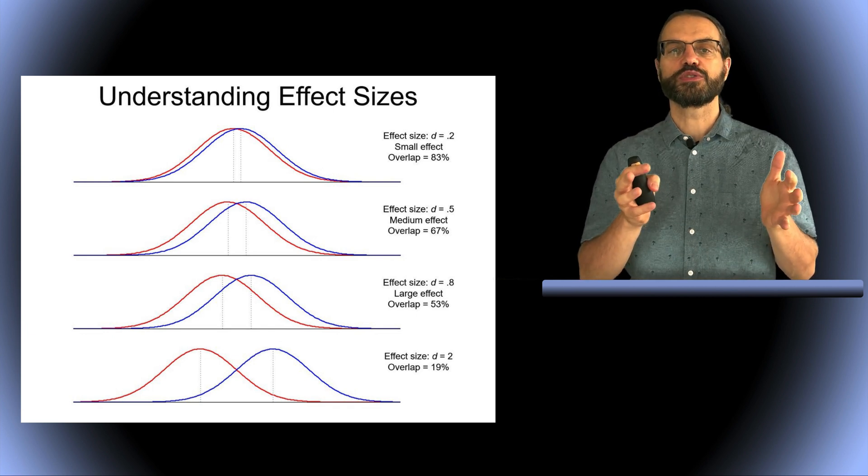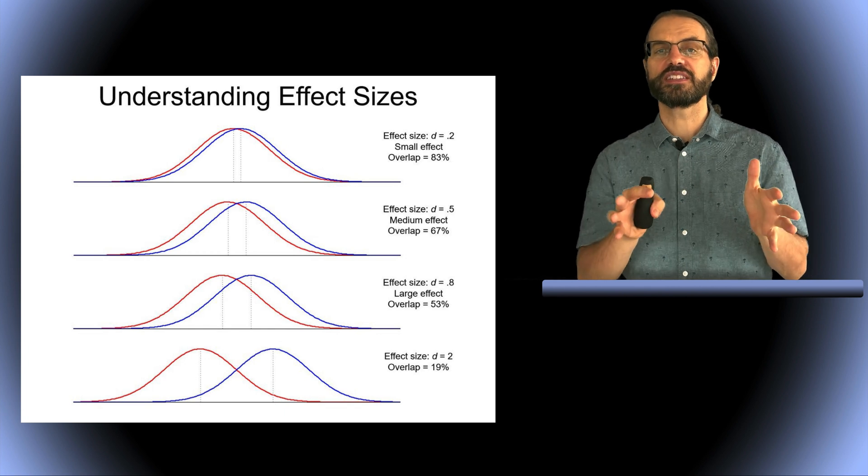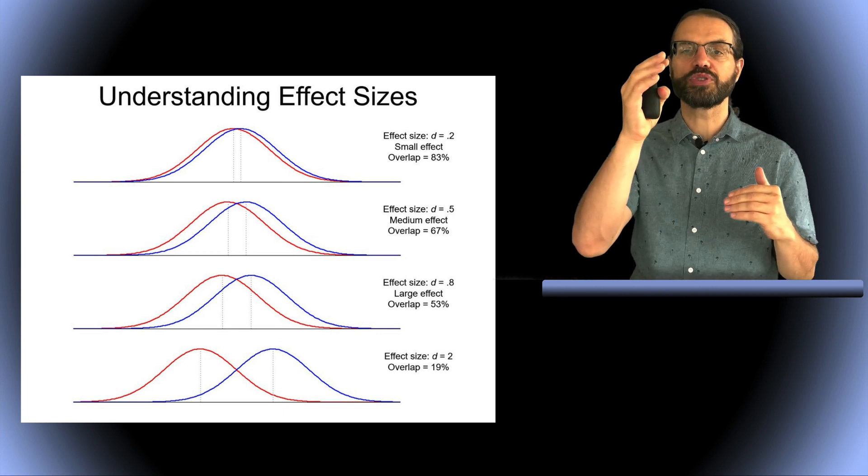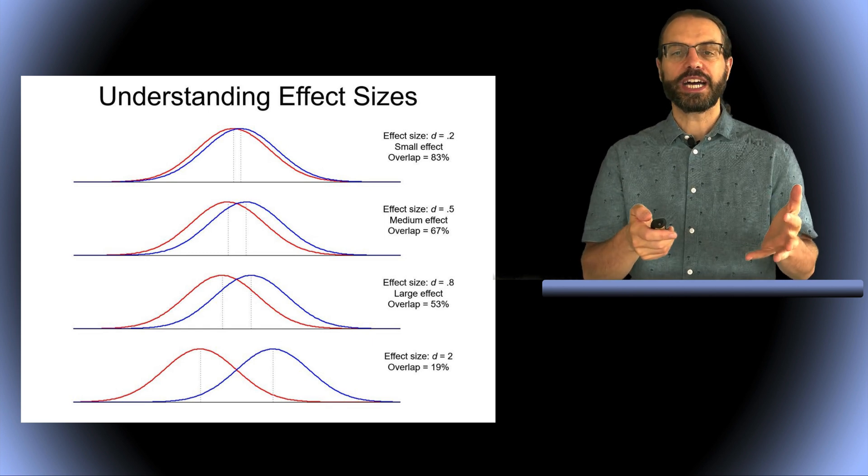Understanding effect size is important. There are standard effect sizes, with 0.2 representing a small effect size, 0.5 representing a medium effect size, and 0.8 representing a large effect size. Why does it matter?